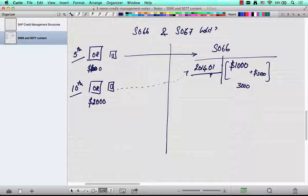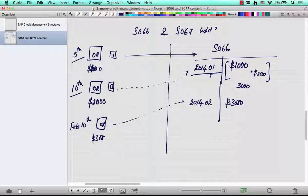It's not going to add a new row until it's the next fiscal. So if you do it on Feb 10th, an order worth $3000, it's going to create another row here. 2014-02, which is the second fiscal and it's going to put $3000 here. So that's how the S066 table is updated. It's by fiscal.